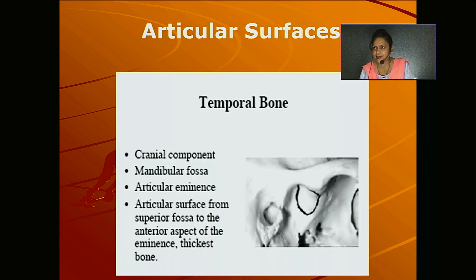The temporal bone is a loose bone of the skull and forms the cranial component of the TM joint. It includes the articular tubercle — an elevation — and the mandibular fossa. There is one eminence called the articular eminence, and above it is an elevation known as the articular tubercle. The temporal bone forms the articular surface of the superior fossa and anterior aspect of the eminence, and is a very thick bone.